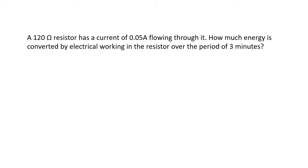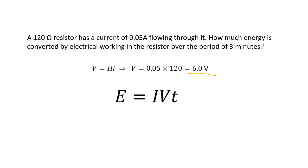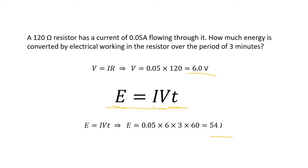Using the same 120 ohm resistor at 0.05 amps example: using Ohm's law we get V = 6 volts. Previously we needed two extra equations, but now we can jump straight to E = IVt, because we know V, I is given, and t is given. We again get 54 joules — just a more efficient route to the same answer. In electricity, there's often more than one way to solve a problem.